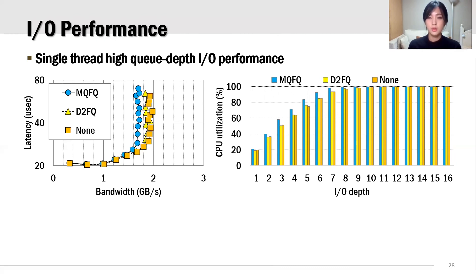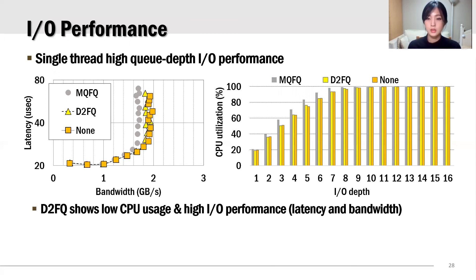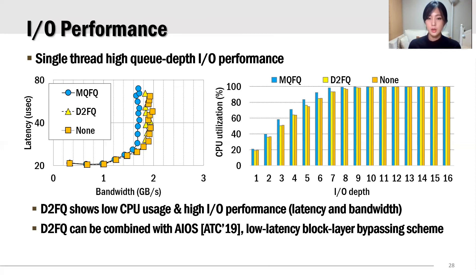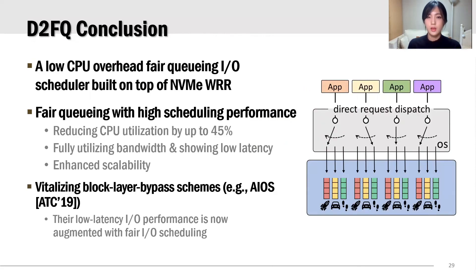The performance of an IO scheduler is also important when the storage device is not saturated. For this evaluation, we ran a single-thread FIO performing 8KB random reads with varying IO depths from 1 to 16. The figure to the left shows IO latency and bandwidth, and the figure to the right shows CPU utilization. MQFQ shows the lowest performance in terms of all three metrics due to its CPU overhead. G2FQ and NONE show similar performance trends since their IO scheduling operations in the block layer are minimal. The submit-equal-dispatch characteristic of G2FQ can enable other block-layer-bypassing schemes to have IO scheduling capability. In this experiment, we built another scheme, io_uring G2FQ — an asynchronous IO stack combined with G2FQ. io_uring G2FQ outperforms the others in terms of IO latency, IO bandwidth, and CPU utilization.